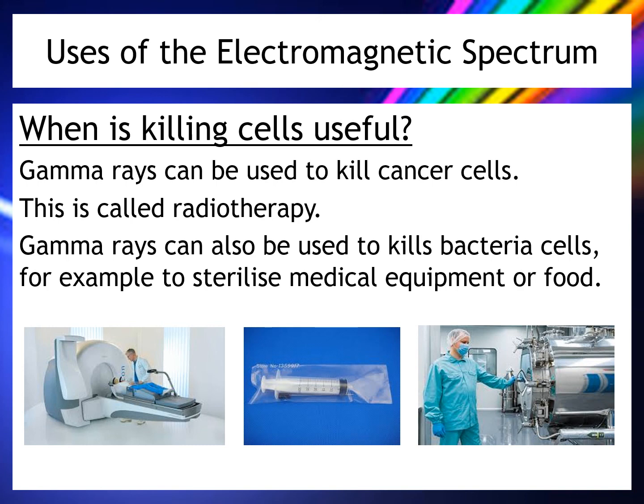The problem with heat sterilization is it limits what equipment can be made from — mostly glass or metal. Using gamma rays means you can sterilize plastic items without heating them. Even better, you can sterilize items while they're inside their packaging, because gamma rays penetrate the plastic outer casing. So a syringe can be sterilized inside its packaging, which remains sealed so bacteria cannot contaminate the syringe after sterilization.